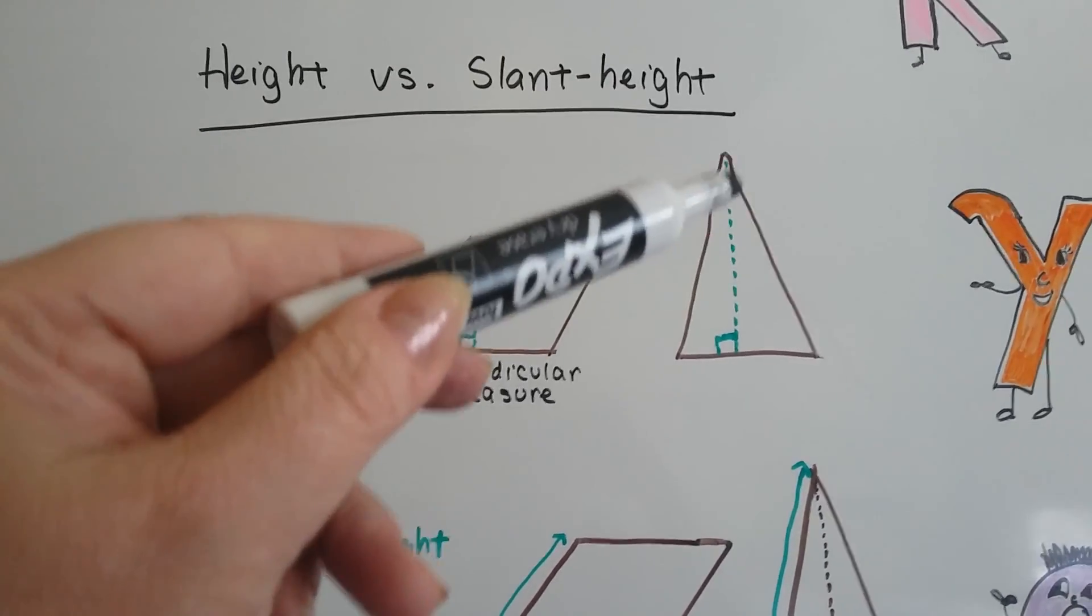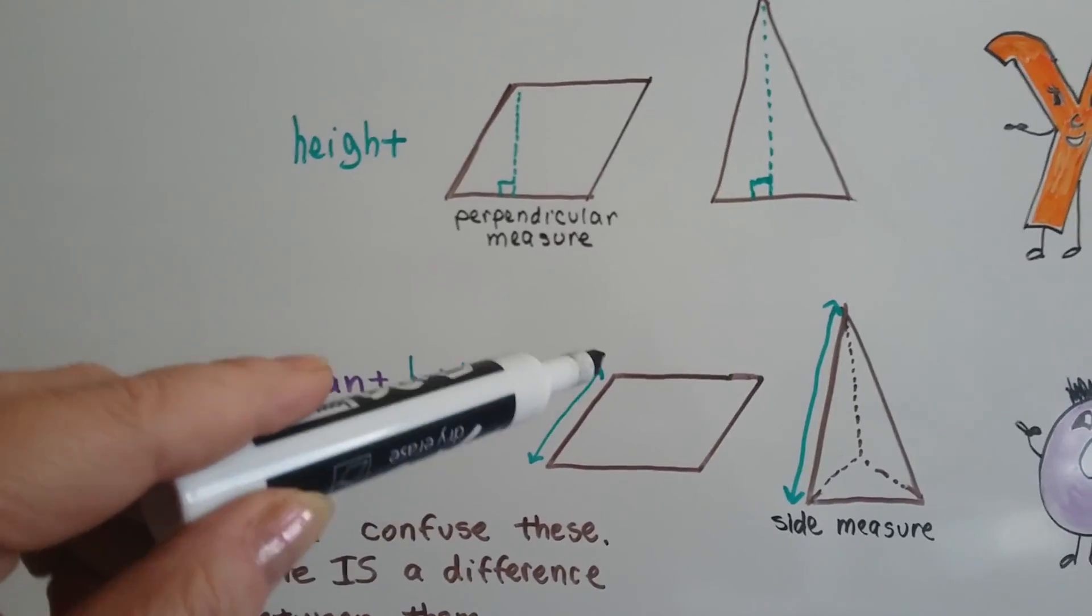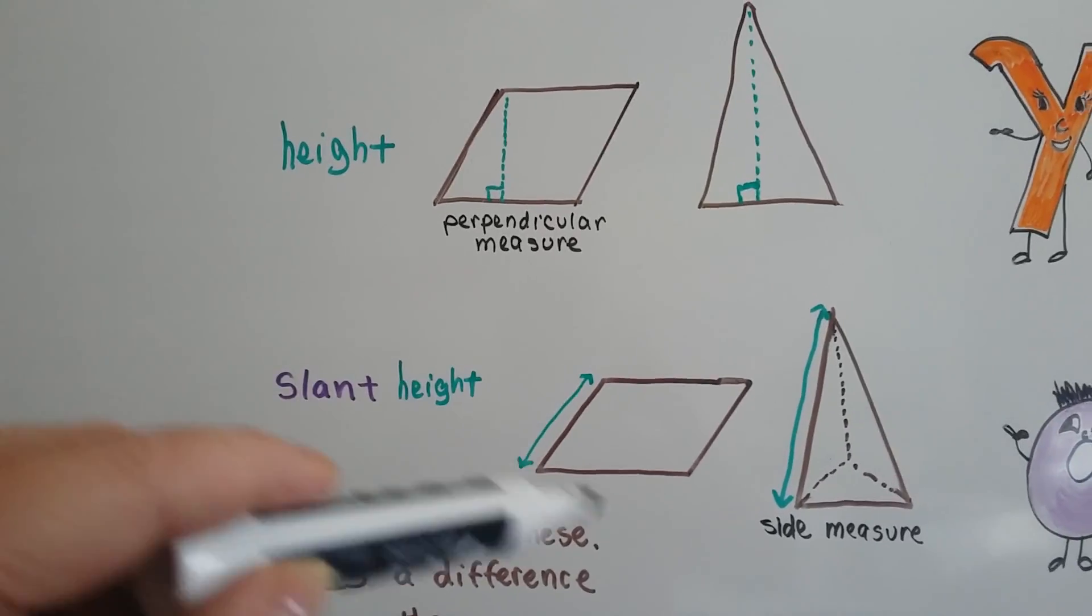And a triangle would come straight down from the vertex and hit the base. The slant height is this side measure.